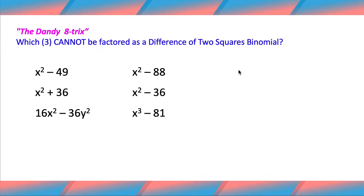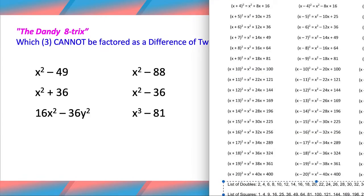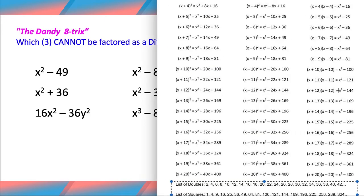So to be a difference of two squares, you literally need to be a difference. That's not a good minus sign. You need to be a difference of two things that would be considered squares. If you need help with the list of perfect squares, you can refer to your 8-7 cheat sheet all the way here at the bottom.